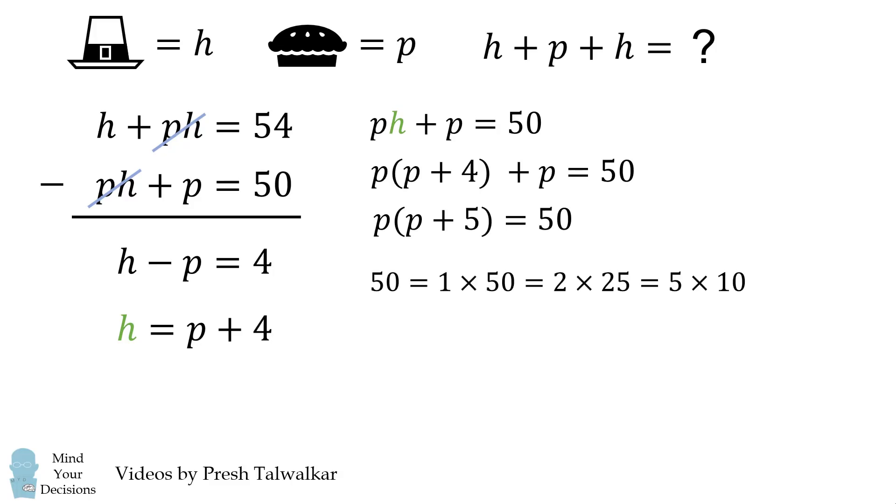We can write that 50 is equal to 1 times 50 or 2 times 25 or 5 times 10. Now we're looking for two factors that have a difference of 5 because we have P and P plus 5. And 5 and 10 exactly fit this characteristic.